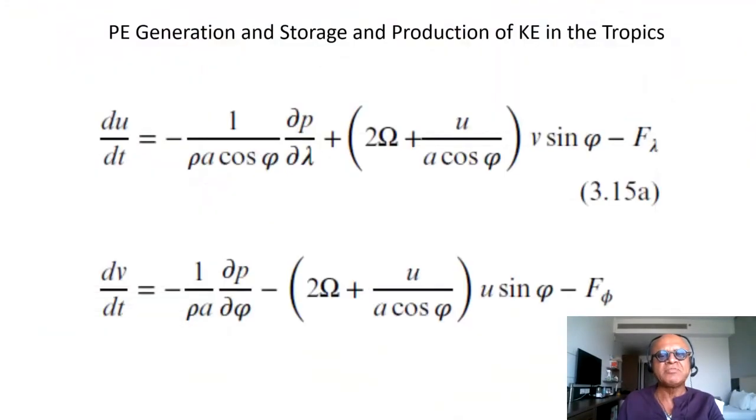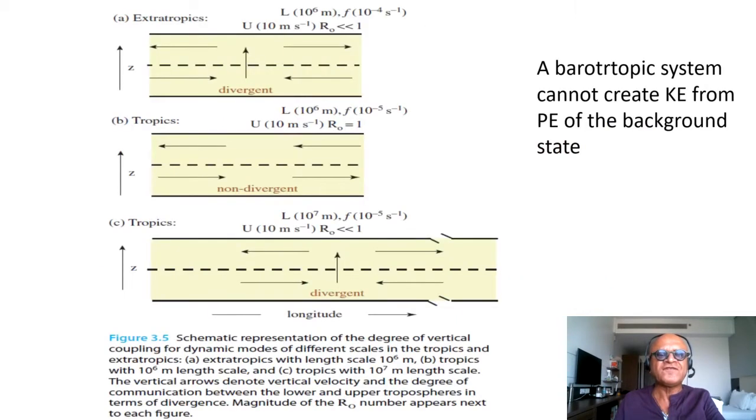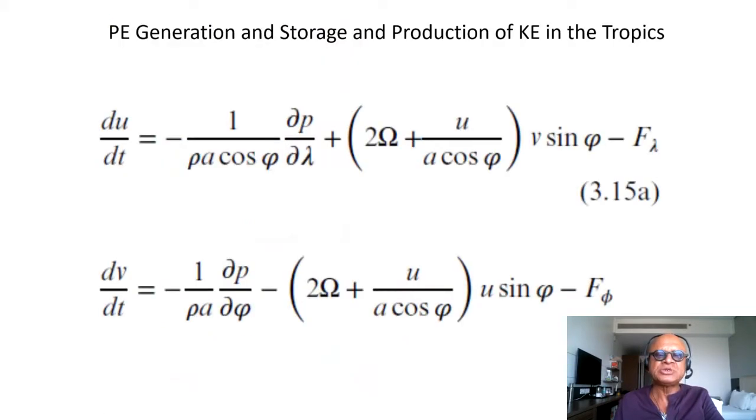We still have to add more about generating kinetic energy in the tropics. At macro scales or at the scale of Madden-Julian oscillations and Walker cell, the tropics can generate divergent motions and produce and store potential energies which can be converted to kinetic energies. How does it happen?